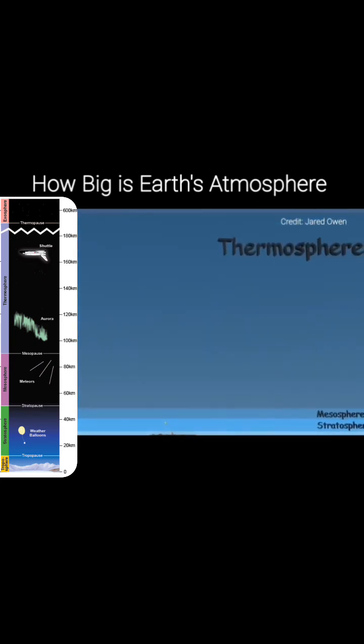The thermosphere goes up to about 440 miles. At about 62 miles is where most consider the start of outer space. This is called the Kármán line. There's still air up here, but it's so thin that sometimes we still forget there's an atmosphere. The northern lights happen here, and the International Space Station orbits about here.